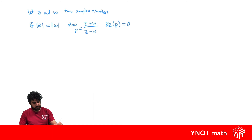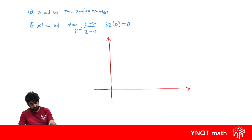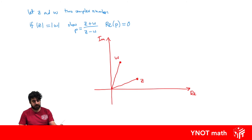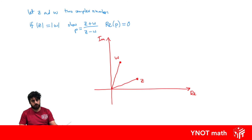Let's draw a diagram to help. Drawing an Argand diagram with real and imaginary axes, we draw in any complex number z, then w, knowing their moduli have to be equal — so they must be the same length. We have expressions for z plus w and z minus w, and when you have these kinds of expressions it hints at drawing a parallelogram.